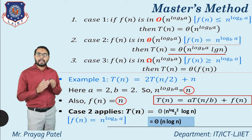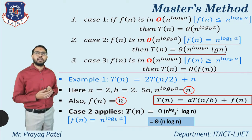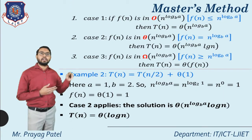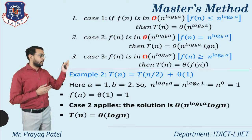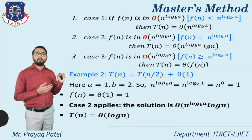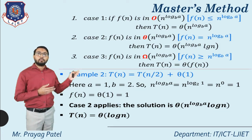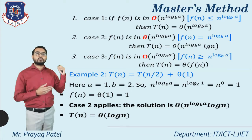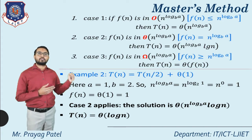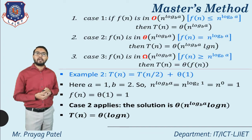According to both the normal method and the variation of the master's method, you can find the solution of the example. Variation example 2: T(n) = T(n/2) + Θ(1). Here a = 1, b = 2. Finding n^(log a base b) = n^(log 1 base 2) = n^0 = 1.